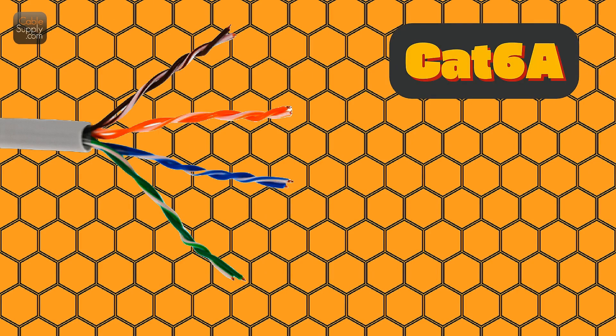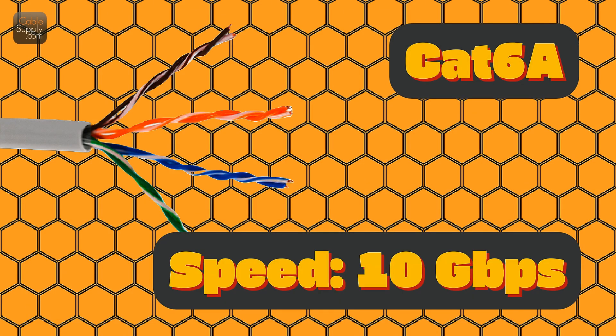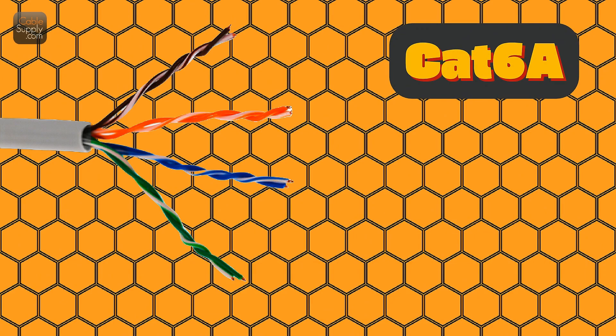CAT 6a — extra power, built for business. Speed: 10 gigabits per second over long distances. Used for large offices, business networks, professional setups. Should I use it? Only if you want the best for your home or are wiring a business. Think of this as the upgraded version of CAT 6. It's built for people who need super fast, super reliable networks — great for offices or serious tech lovers.